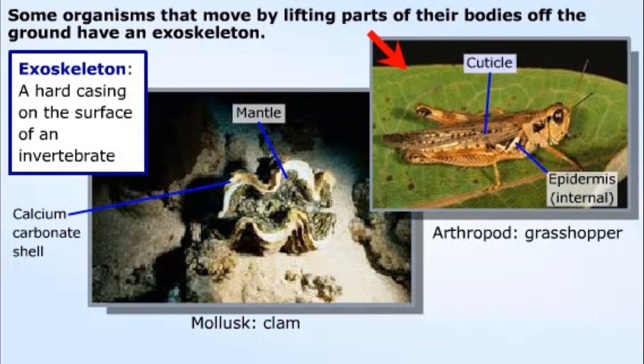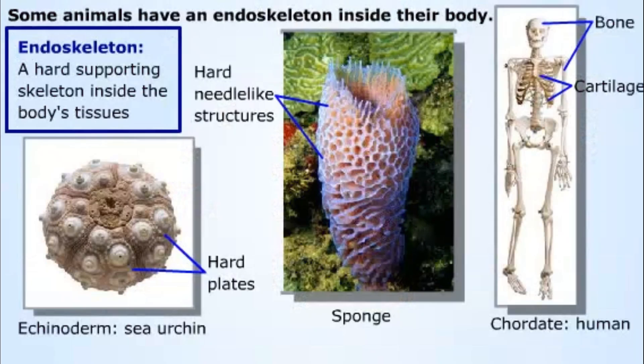Most arthropods, like this grasshopper, have a jointed exoskeleton called a cuticle. The cuticle is composed of non-living material, including the polysaccharide chitin, and is secreted by the epidermis. Muscles that attach to the knobs and plates of the exoskeleton extend into the body.